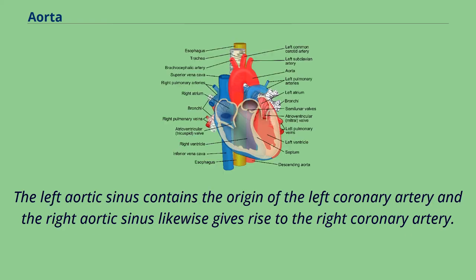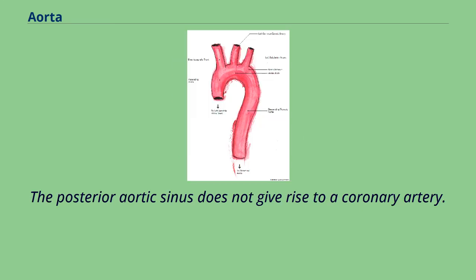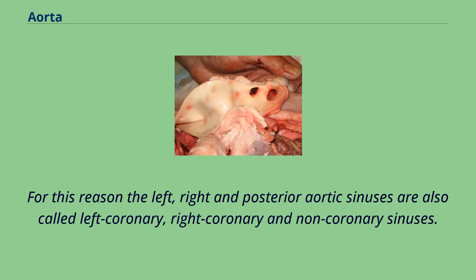These pockets are called the aortic sinuses or the sinuses of Valsalva. The left aortic sinus contains the origin of the left coronary artery, and the right aortic sinus likewise gives rise to the right coronary artery. Together, these two arteries supply the heart. The posterior aortic sinus does not give rise to a coronary artery. For this reason, the left, right, and posterior aortic sinuses are also called left coronary, right coronary, and non-coronary sinuses.